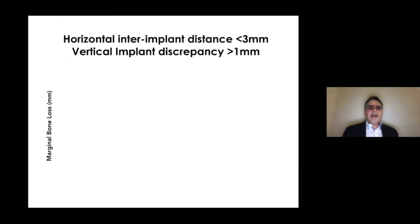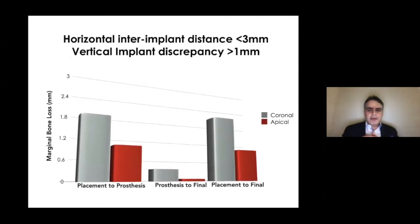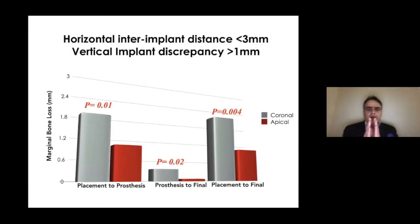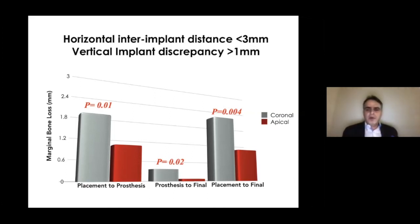Now looking at horizontal inter-implant distance less than three millimeters combined with vertical implant discrepancy greater than one millimeter — it's interesting. At all time frames, it reached statistical significance, meaning that if we place implants close enough with vertical discrepancy, we will have more marginal bone loss. So these two factors hand-in-hand result in more marginal bone loss. This was a very interesting finding.